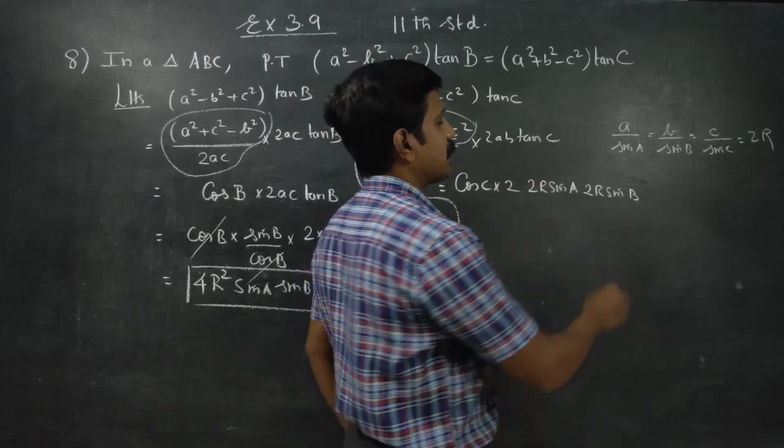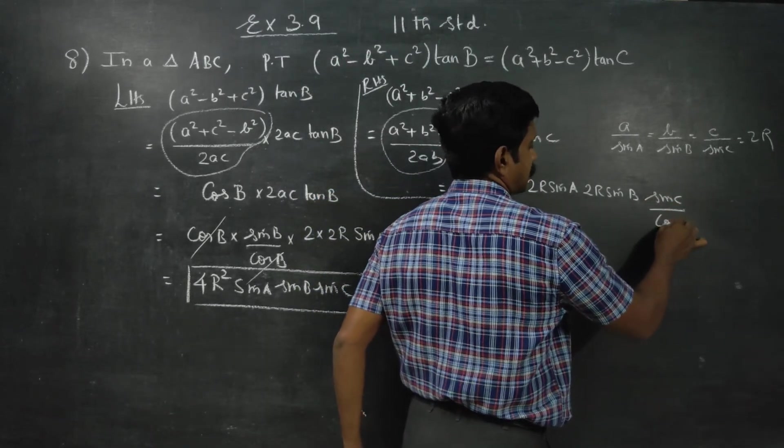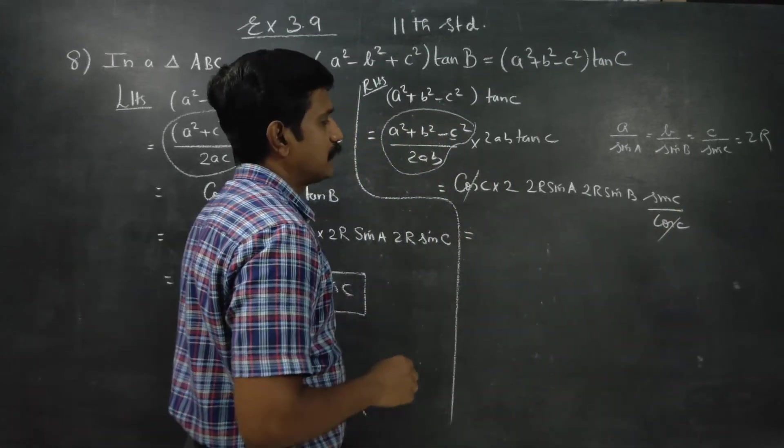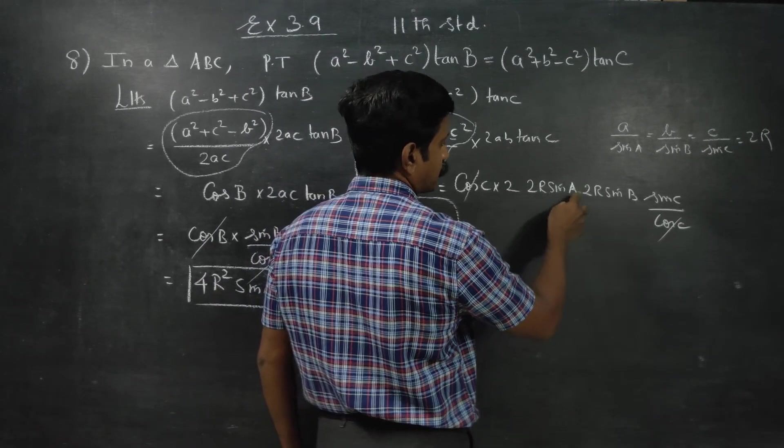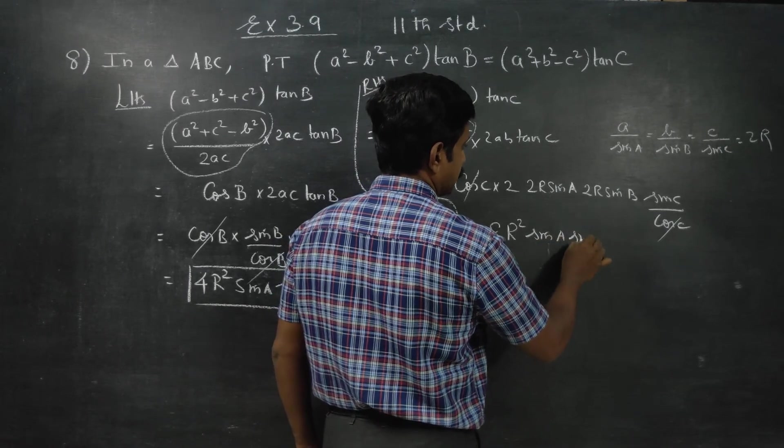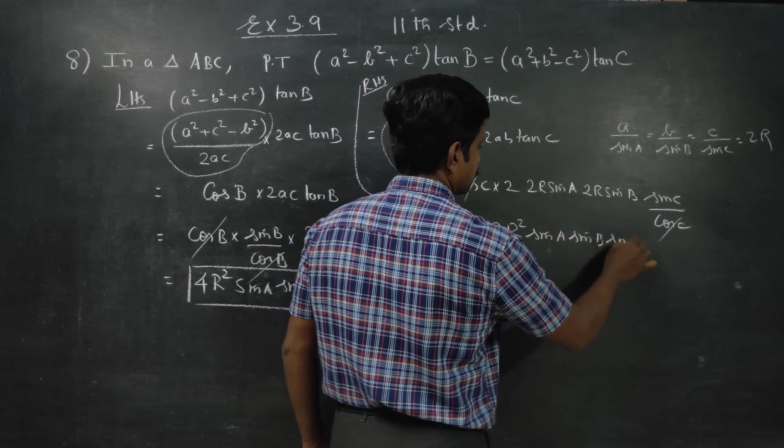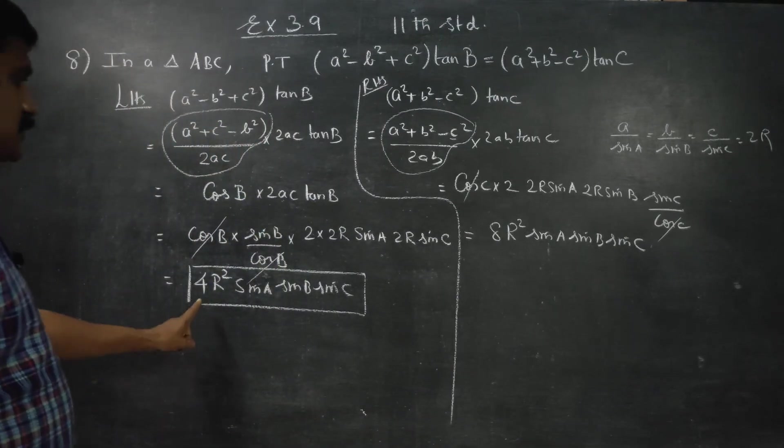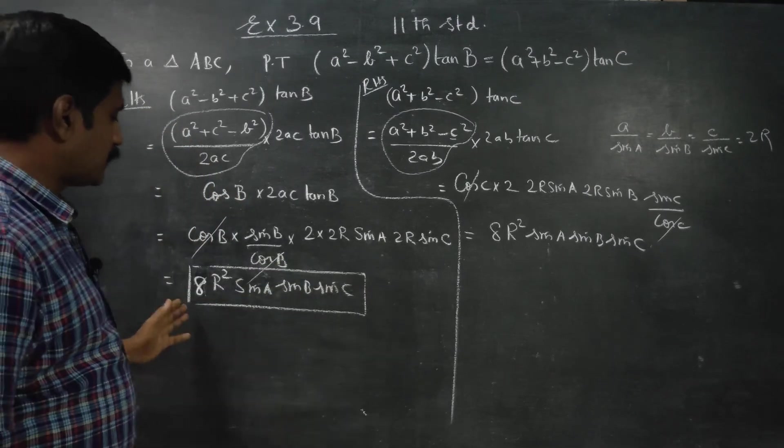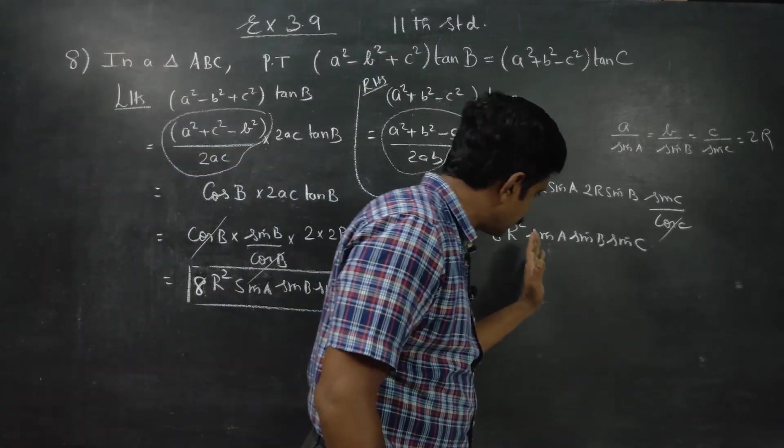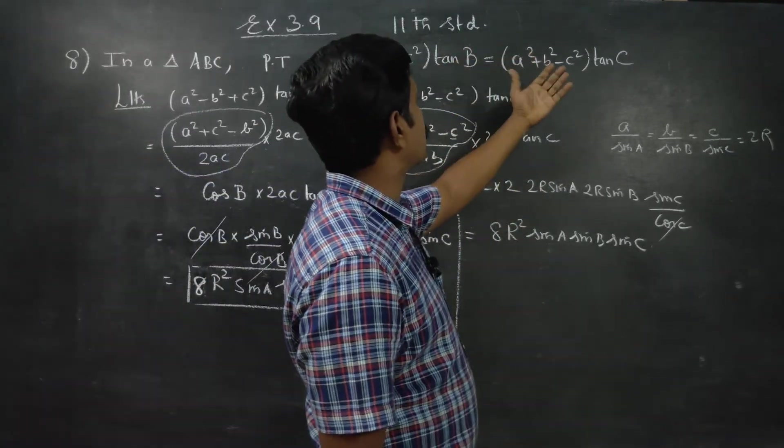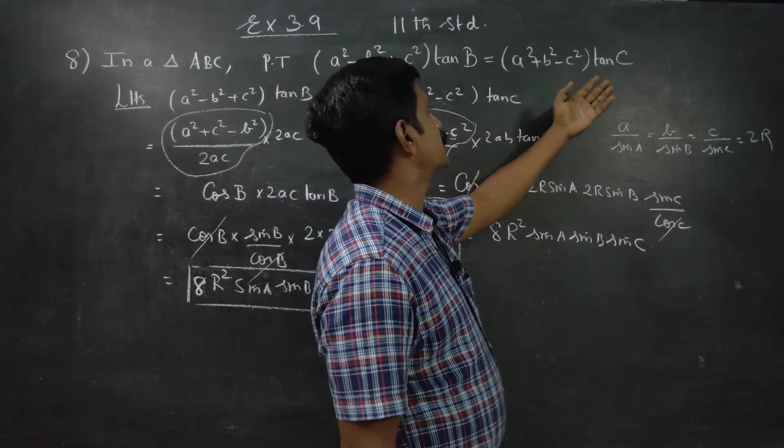Tan C can be written as sin C by cos C. Cos and cos cancel. Your answer will be 2R, 4, 8R² sin A sin B sin C. Actually, wait—this is 2 to 4, 4 to 8, so 8R² sin A sin B sin C. Actually you can see they are equal: LHS result, RHS result equal, proved.